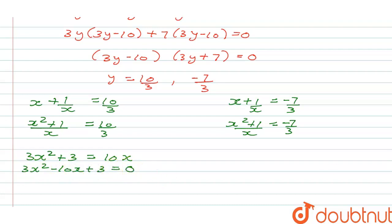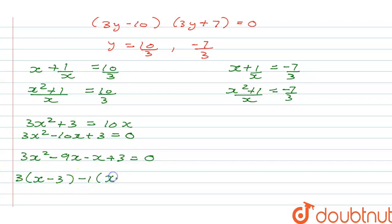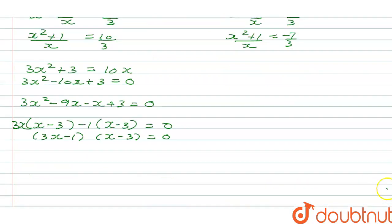Splitting the middle term: 3x squared minus 9x minus x plus 3 equals 0. Taking 3x common from the first pair and 1 from the second gives 3x minus 1 and x minus 3 as factors. Equating to zero: x equals 1 by 3 and x equals 3.